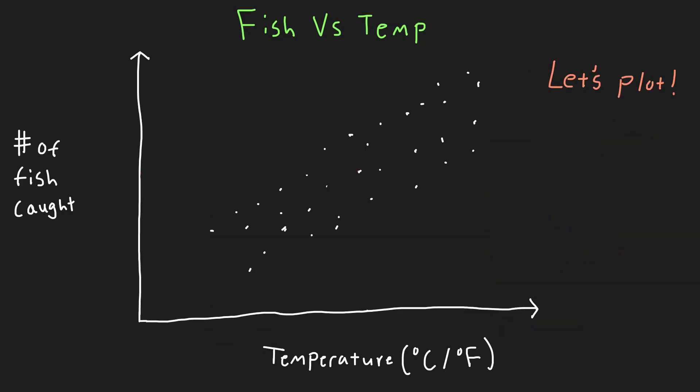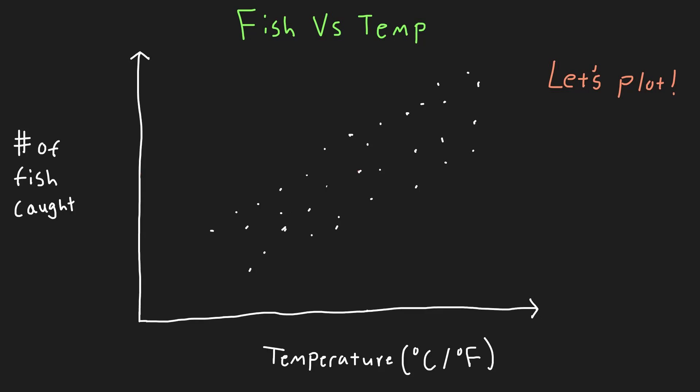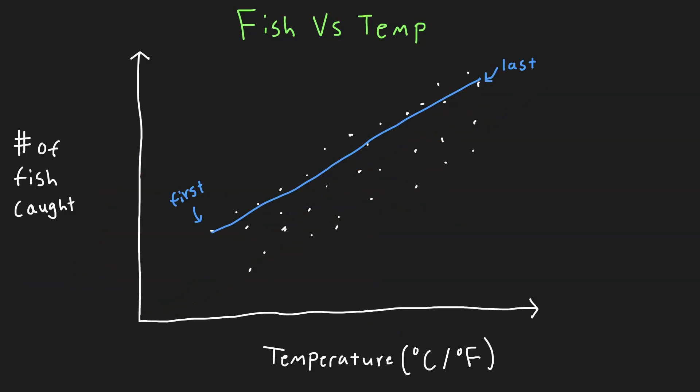Now that we can interpret our line of best fit, let's actually plot it. You'll notice if we try to plot it, there are a few different ways we can fit the line. Different lines of best fit will give us different predictions, so it is important we choose a good one. A few different ways we can do this is starting at the first point and ending at the last point, or we can try to put it in the middle of our data.